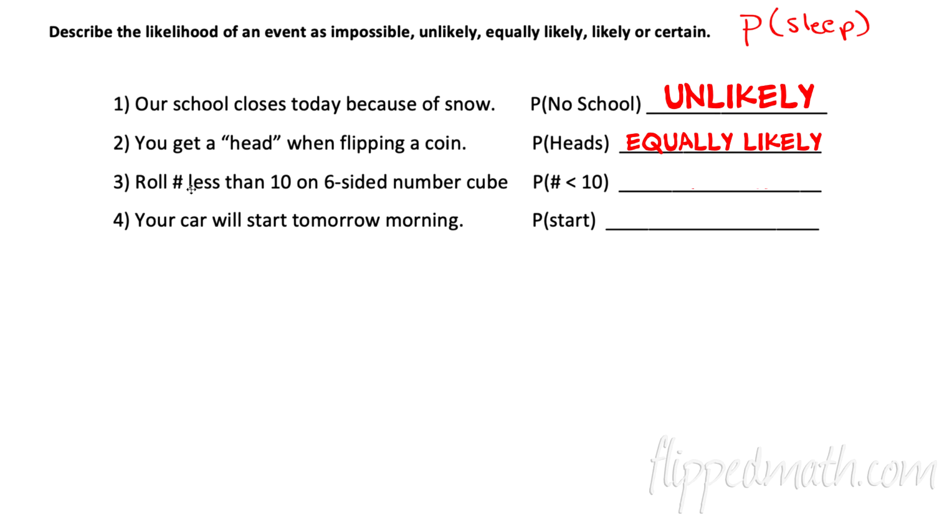How about number three? You roll a number less than 10 on a six-sided number cube. Well, a six-sided number cube is just dice. So what is the probability that you roll a number less than 10? The probability that a number is less than 10, we would call that certain because all the numbers are less than 10. So it'll always happen.